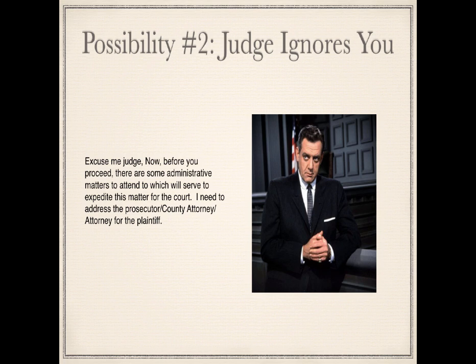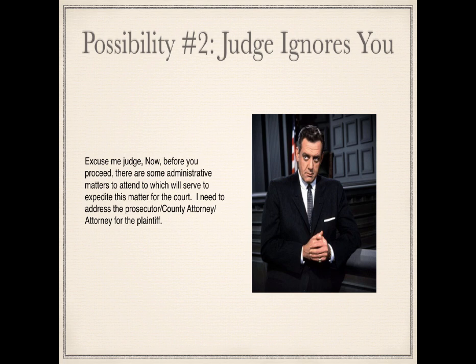Here's another possibility — the judge continues to ignore you. 'Excuse me, judge. Before you proceed, there are some administrative matters to attend to, which will serve to expedite this matter for the court. I need to address the prosecutor.' The judge is just ignoring you, but you've set the record by his silence and you're proceeding accordingly. You pivot from the judge to the prosecutor: 'Mr. Prosecutor, do you have a claim against me, the living man who is beneficiary of this estate? If so, please present it now so I can examine it. Where's your verified claim? Please show me.' He'll distract and defer and hem and haw. He might say, 'Well, we have a complaint in this case against John Q. Defendant, which I presume is you.' Again, they're trying to trap you into admitting you are the defendant.